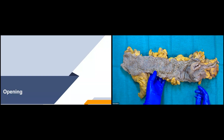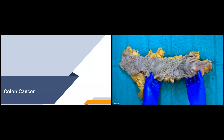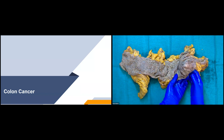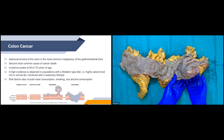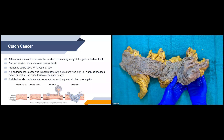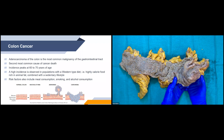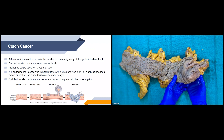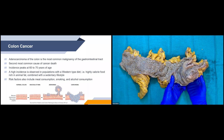As some of you may have guessed, this specimen is out for colon cancer. This is the cancer right here, right in the cecum. Adenocarcinoma of the colon is the most common malignancy of the gastrointestinal tract. It's the second most common cause of cancer death. The incidence usually peaks around 60 to 70 years of age. There's a higher incidence observed in Western-type food diets because of high calorie foods rich in animal fats, combined with a sedentary lifestyle. Other risk factors include meat consumption, smoking, and alcohol consumption, as well as a few genetic components.